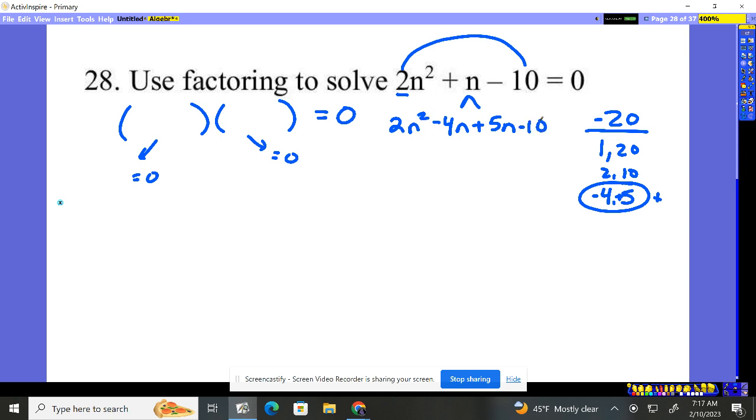So now I have four pieces. I'm going to factor by grouping. I group the front, group the back, in between is a plus, so I'm good.